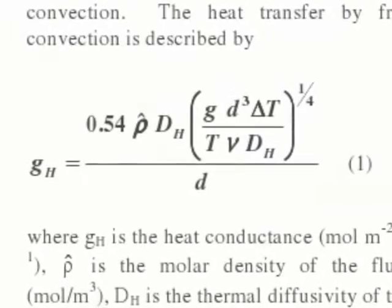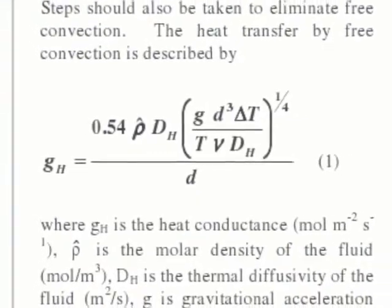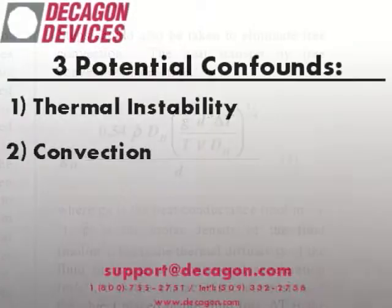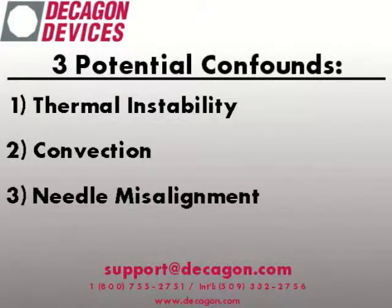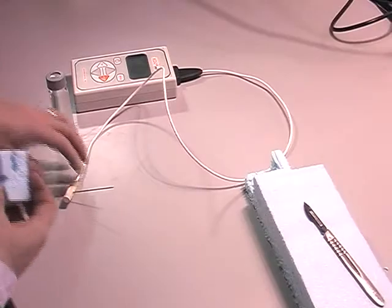The mathematics on which the KD2Pro measurements are based assume a vertical orientation of the probe. Even a very slight angle can result in mistaken readings. To control for this, devise a homemade tool to hold the needle straight.